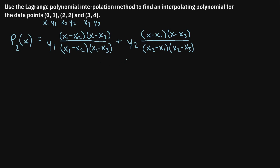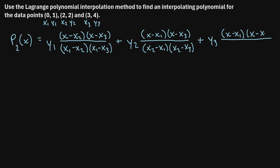We keep repeating this pattern for each x-y coordinate. We only have one more y value, y3, so we add: y3 multiplied by (x − x1)(x − x2) in the numerator, and in the denominator (x3 − x1) times (x3 − x2).